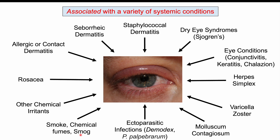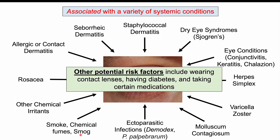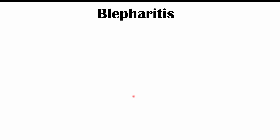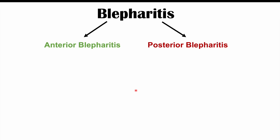Additional risk factors that increase likelihood of getting blepharitis include wearing contact lenses, having diabetes, and taking certain medications. Blepharitis can be broken down into different types: anterior blepharitis and posterior blepharitis, each depending on where the inflammation is occurring.